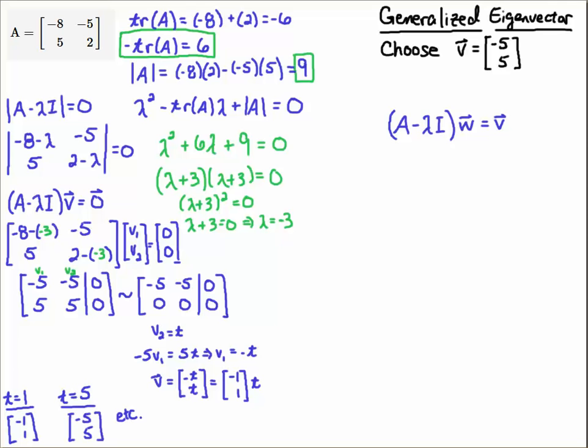So to find the generalized eigenvector, you're going to solve this system of equations. So you're going to put the eigenvector you're choosing here on the right-hand side. And then you're going to solve for the generalized eigenvector. The reason you're doing that is you're getting this chain here where you have the eigenvector plus lambda times the generalized eigenvector.